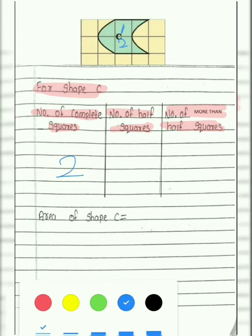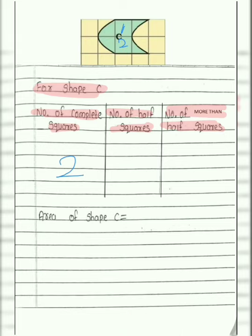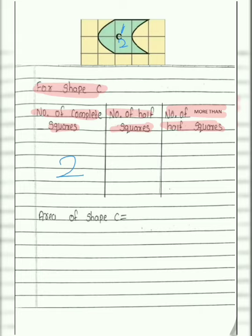Now, number of half squares. Students, can you observe it? You will notice that these two appear to be half squares, but they are not — they are less than half. So we cannot count them as half squares. The number of half squares is 0.